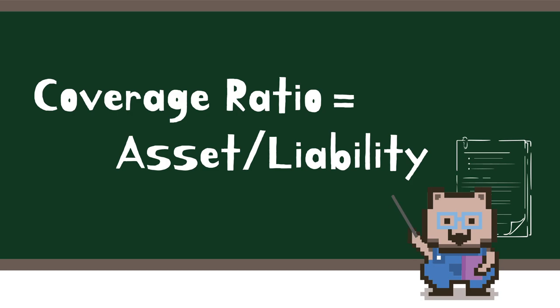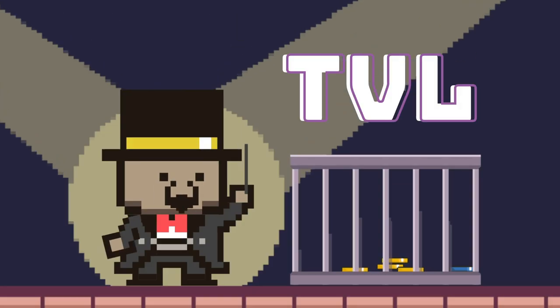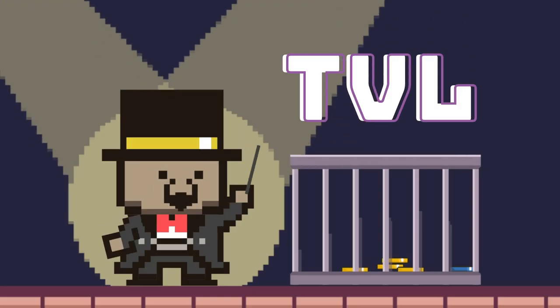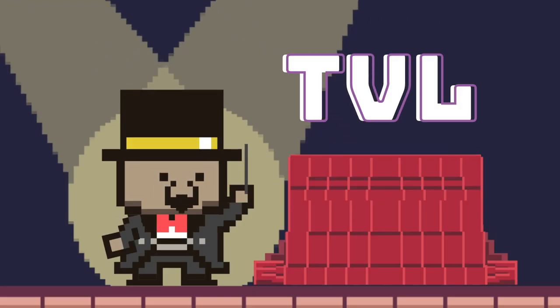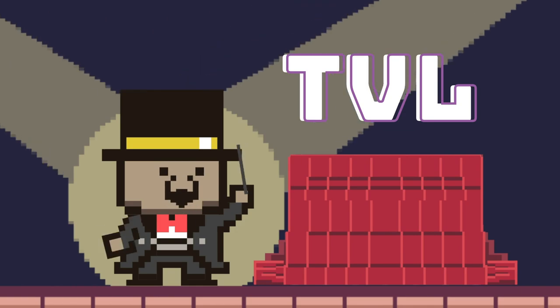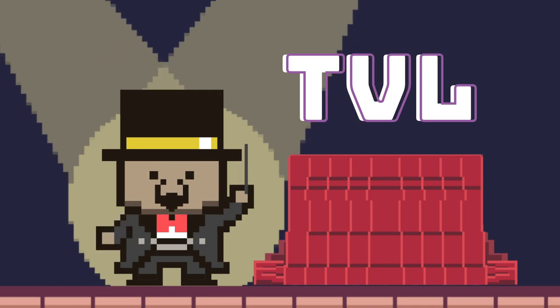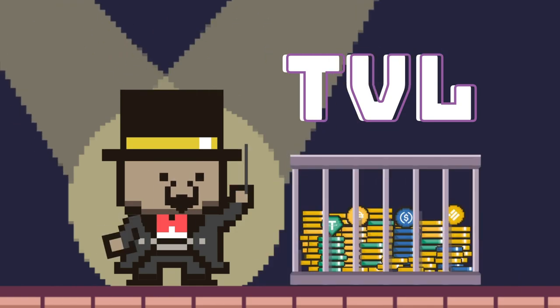In short, it is Wombat's ability to cover its liabilities with its assets for each token. TVL refers to total value locked, which is the value of assets in the liquidity pool in US dollars.